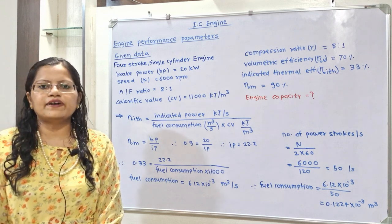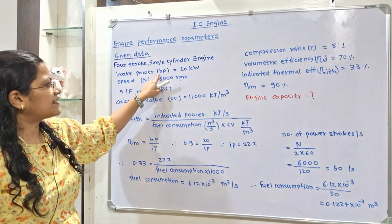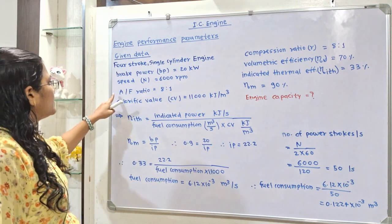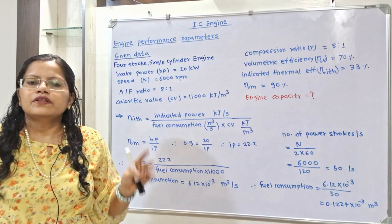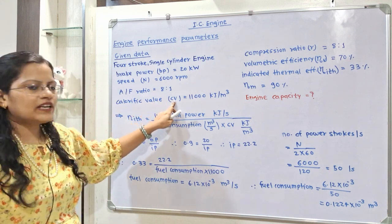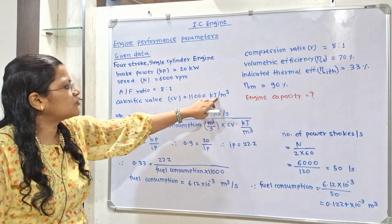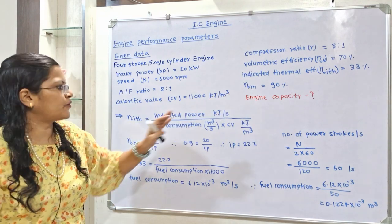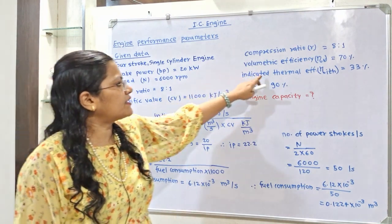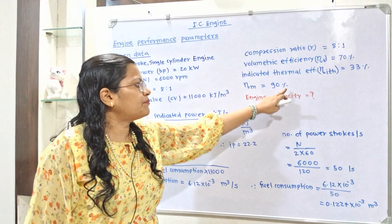Let us understand the given data. This is a 4-stroke single cylinder engine. Brake power BP is 20 kW. Speed N is 6000 rpm. Air to fuel ratio is 8 to 1. The fuel used is in gaseous state, so calorific value of fuel is 11000 kJ per meter cube — the denominator is in meter cube because of the gaseous fuel. Compression ratio R is 8 to 1. Volumetric efficiency η_V is 70%, indicated thermal efficiency η_ITH is 33%, and mechanical efficiency η_M is 90%.